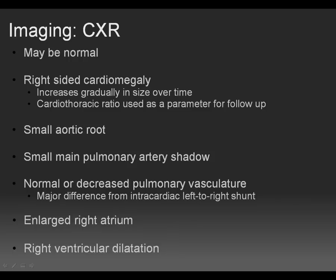Epstein's anomaly and its sequelae may be identified at a variety of imaging modalities: plain chest radiography, echocardiography, and cross-sectional imaging such as CT and cardiac MR. At chest radiography, a variety of appearances may be encountered, including normality.